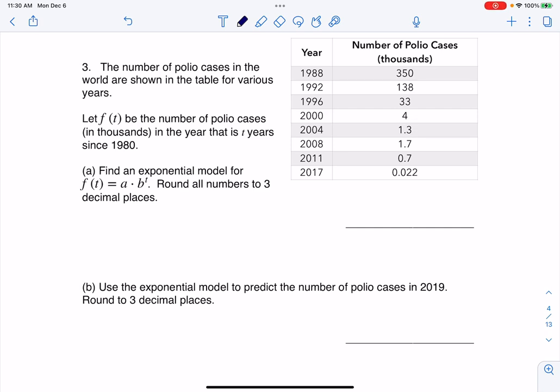Hey everyone, let's take a look at free response number three. Here we have the number of polio cases in the world shown in the table for various years. Let F(t) be the number of polio cases in thousands. That means in 1988, we didn't have 350 cases, we had 350,000 cases. So just keep that in mind.